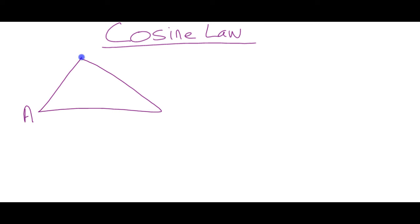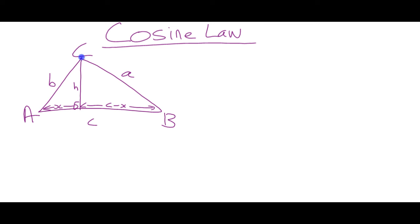Here is triangle ABC. We're going to drop down an altitude, just as we did before, which will be the height. We're going to name the sides — sides are named with the lowercase letter of the side they're opposite. So this is C and this is B. Because we made a right-angled triangle here, we're going to call this X, which makes this length C minus X.